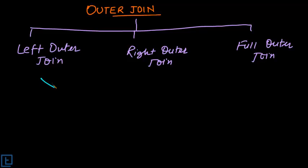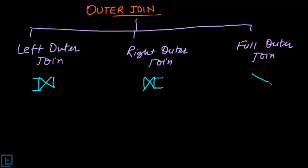Left outer join is represented by this join symbol with the left side extended, meaning all the tuples from the left relation will be included. Similarly, right outer join is the reverse — extended towards the right, meaning all tuples from the right relation will be included. Full outer join is extended to both sides, meaning all columns from both tables will be included.